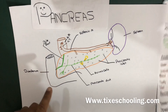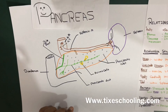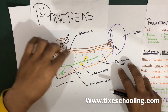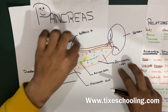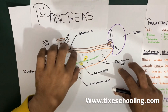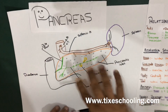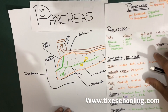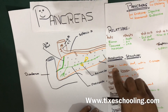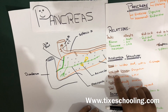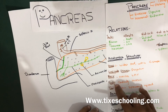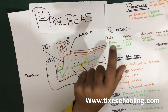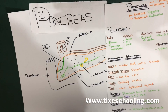The pancreas is divided into different regions. The head is located near the duodenum, which covers over it. Then we have the body, and finally the tail — three main parts. In more anatomical detail, the pancreas is divided into the head, uncinate process, neck, body, and tail, which we'll discuss shortly, but first let's cover the relations of the pancreas.